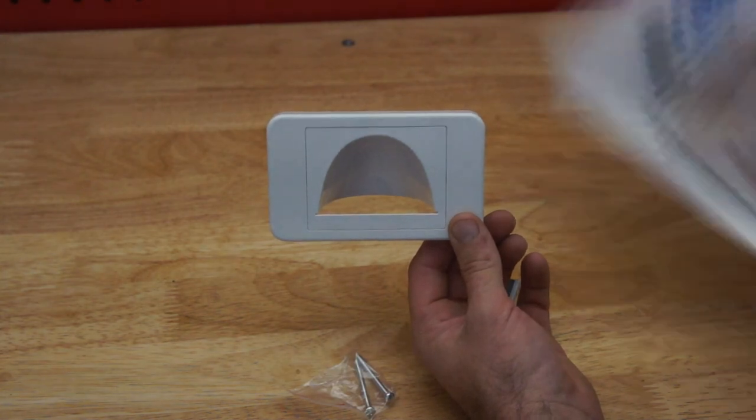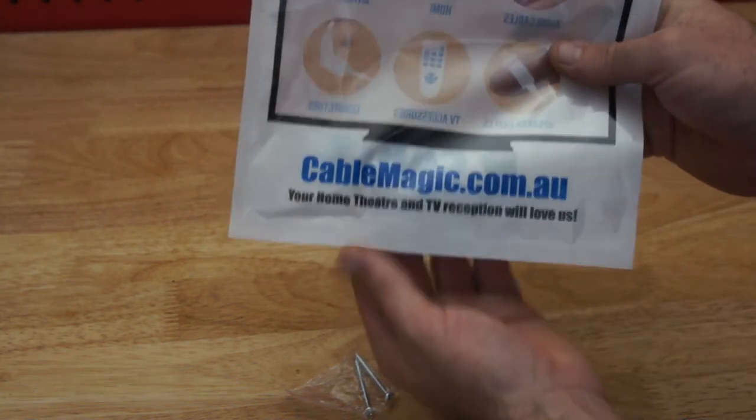So that's the Bullnose internal wall plate and they're available from CableMagic.com.au.